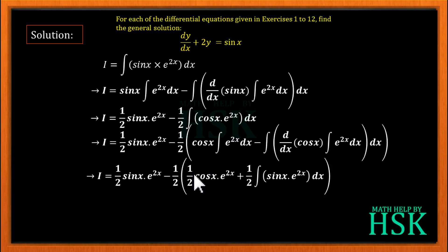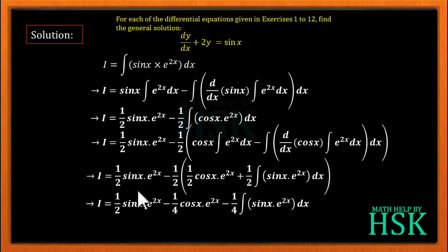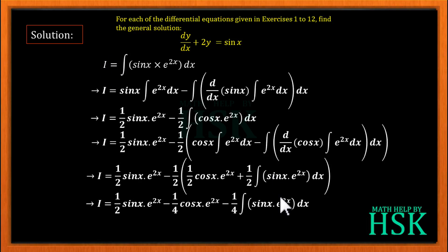Opening the bracket, this 1/2 times 1/2 becomes 1/4, giving −(1/4)cos x · e^(2x). The last term becomes −(1/4)∫sin x · e^(2x) dx. We can see that this integral is the same as our original integral I, so we substitute it back as I.